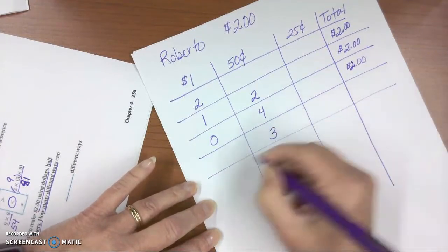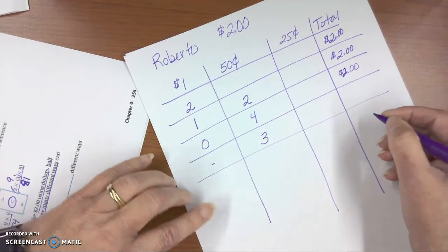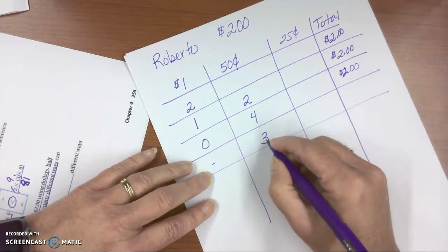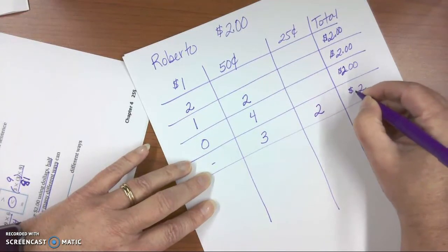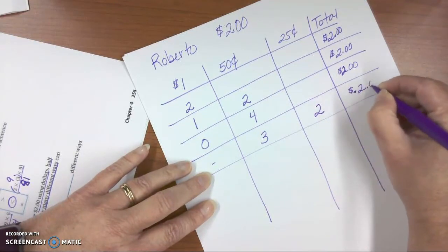What if he only used three 50-cent pieces? Well, I need to make 50 more cents, so I would use two quarters, and that would give me $2.